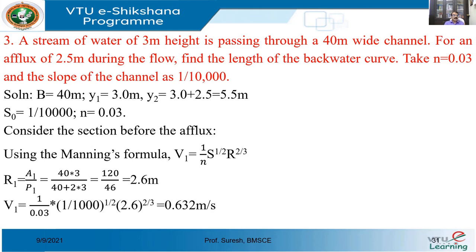Dear Rob, in the last class we solved a couple of problems. We will continue with some more problems about gradually varied flow. The third problem goes like this: a stream of water of 3 meter height is passing through a 40 meter wide channel. For an afflux of 2.5 meter during the flow, find the length of the backwater curve. Take Manning's Roughness Coefficient n equal to 0.03 and the slope of the channel as 1 in 10,000.